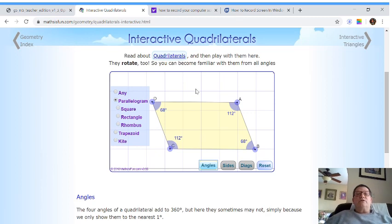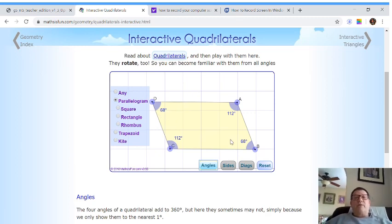So let's take a look at this little interactive one I have here. If you notice right now, this is a parallelogram. And you notice D and B are exact same angles, and A and C are the same.